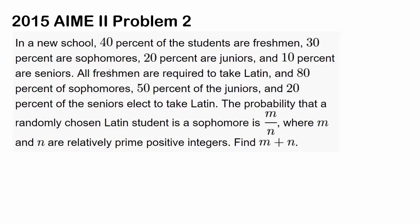Let's try 2015 AIME2 Problem 2. In a new school, 40% of the students are freshmen, 30% are sophomores, 20% are juniors, and 10% are seniors.